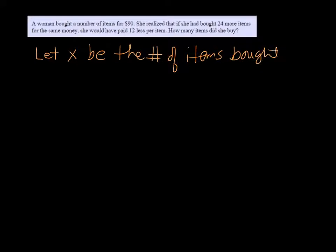Well, if we let X be the number of items that she buys, then we can get the price per item because it would be $90 divided by each item. Like if she bought 10, then $90 divided by 10 items would be $10 per item. We don't know how many items she bought, so we're just going to leave the price per item to be $90 over X.